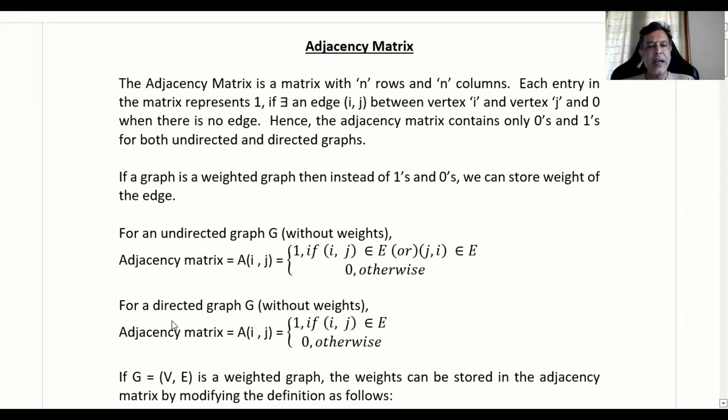Similarly for a directed graph G without weights, the adjacency matrix will be A[i,j] where A[i,j] will take value 1 if (i, j) is an element of E. Here you don't have this other option (j, i) because it is directed. All other elements will become 0 otherwise.